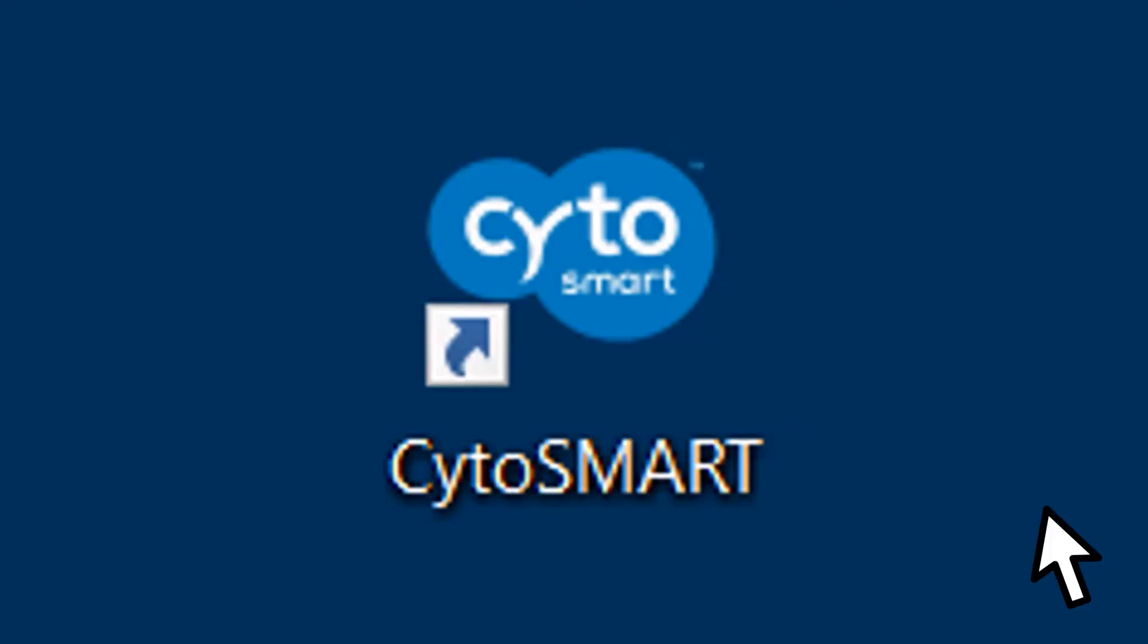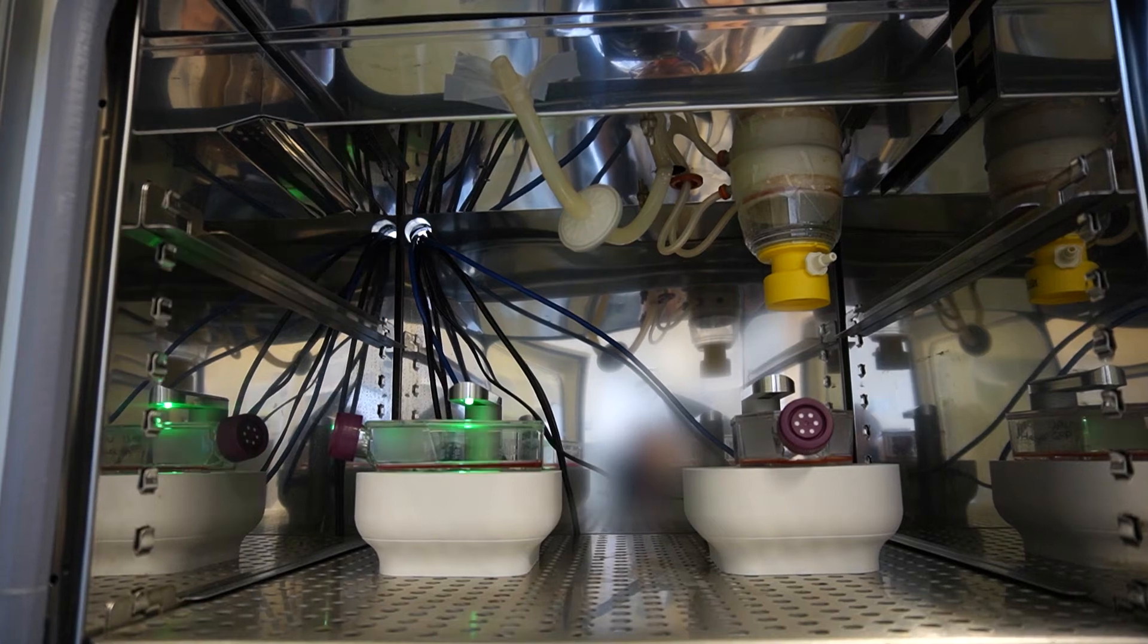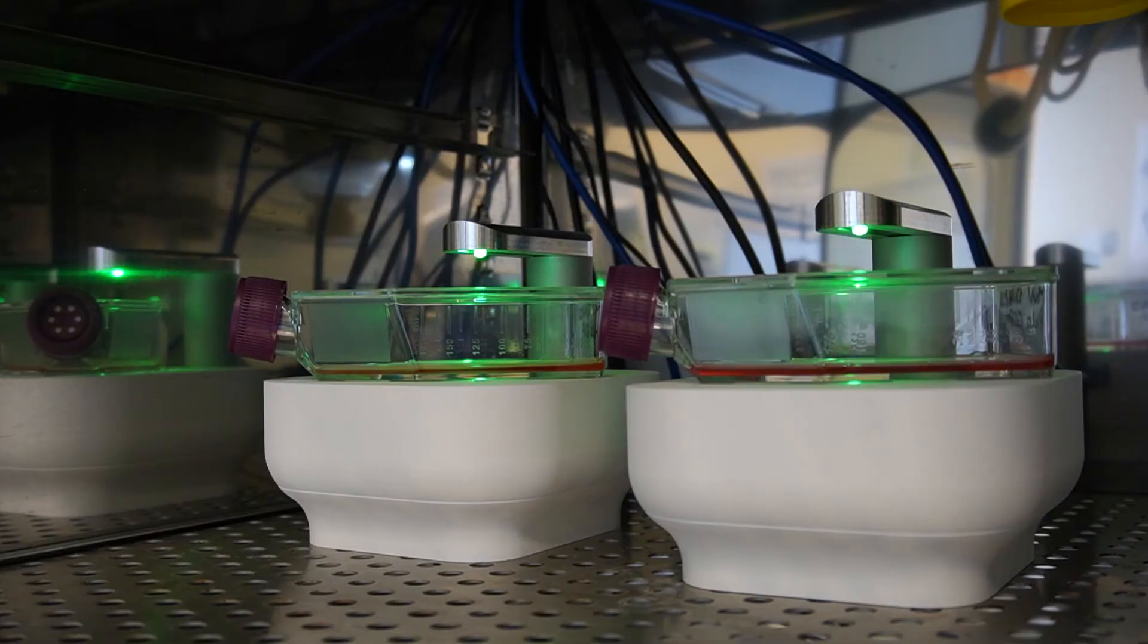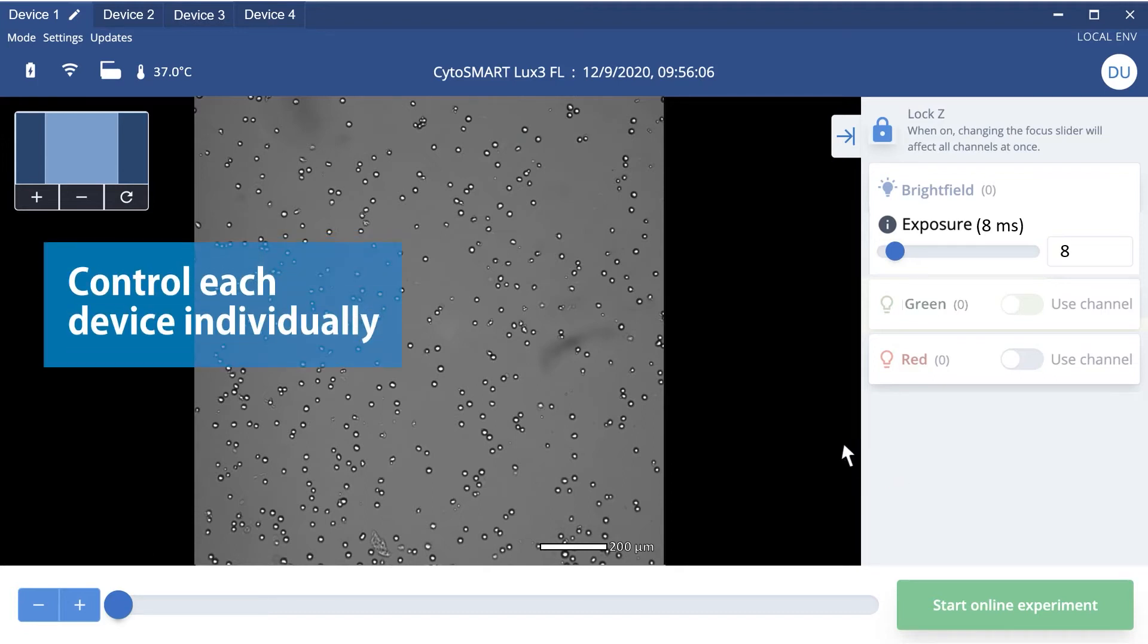Open the Cytosmart app and log into your personal account. The green LED of the device will light up and your cell culture will be shown in the live view. You can easily control each device individually by switching between device tabs in the app.